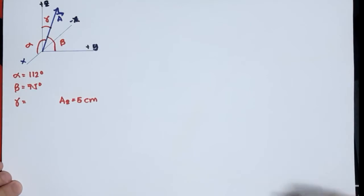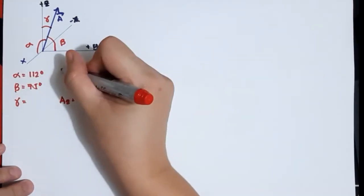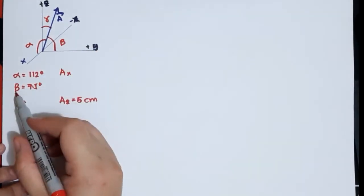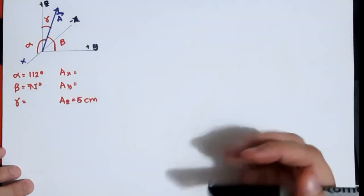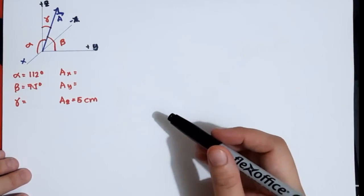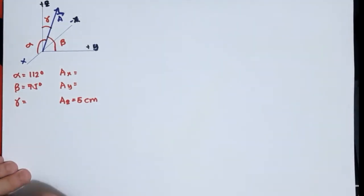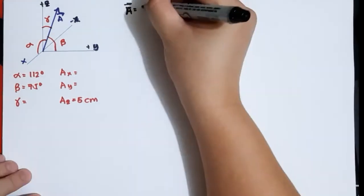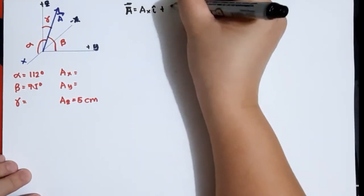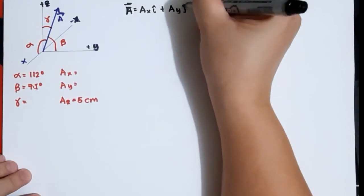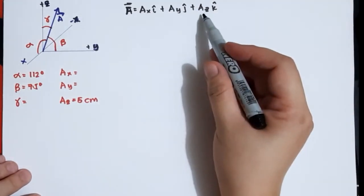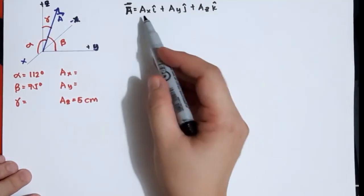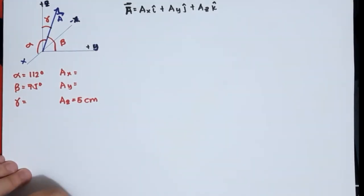The first thing we have to do is complete the given. If we have alpha, we find Ax. If we have beta, we find Ay. To complete our unknowns, we will use these to find the Cartesian vector, which can be expressed as Ax i-hat plus Ay j-hat plus Az k-hat. Since Az is already known, our problem is to find Ax and Ay.